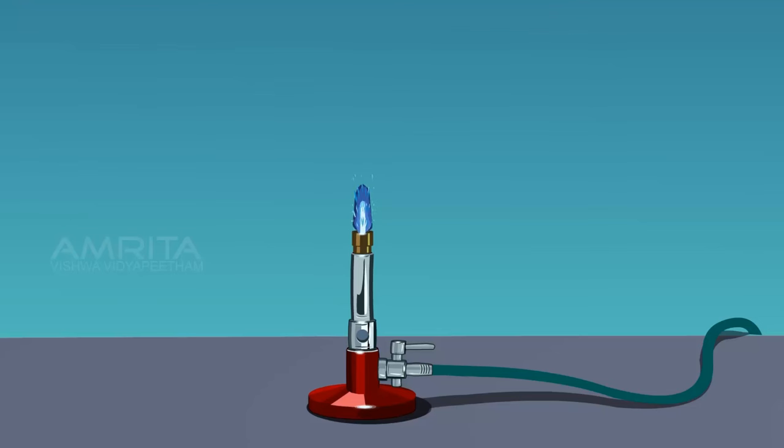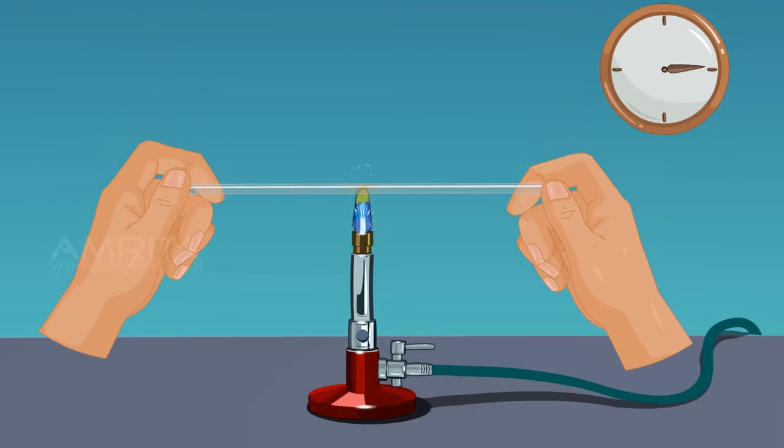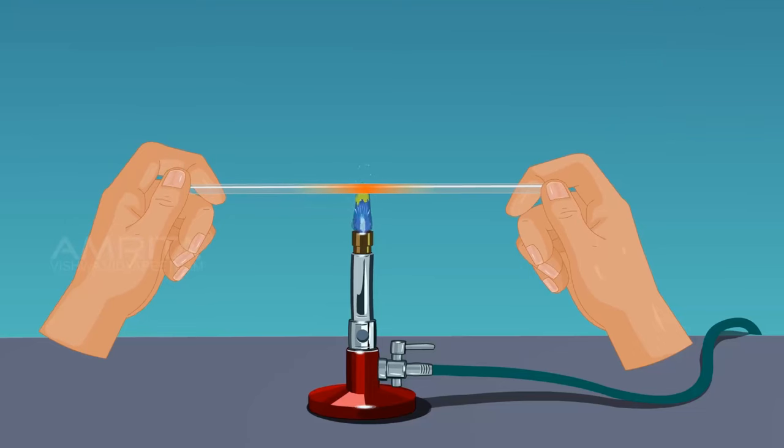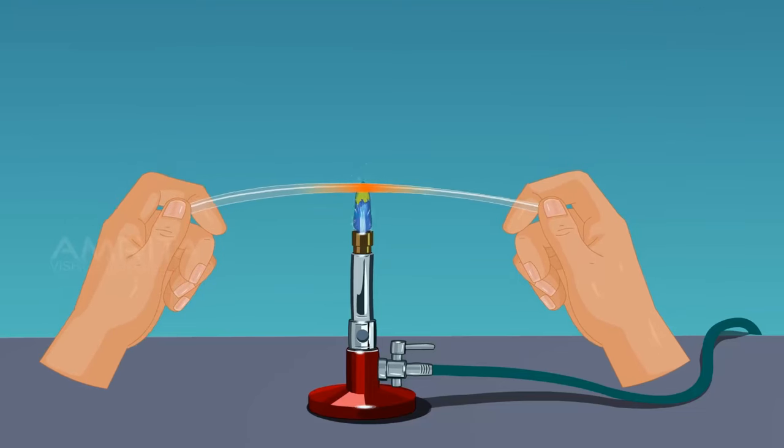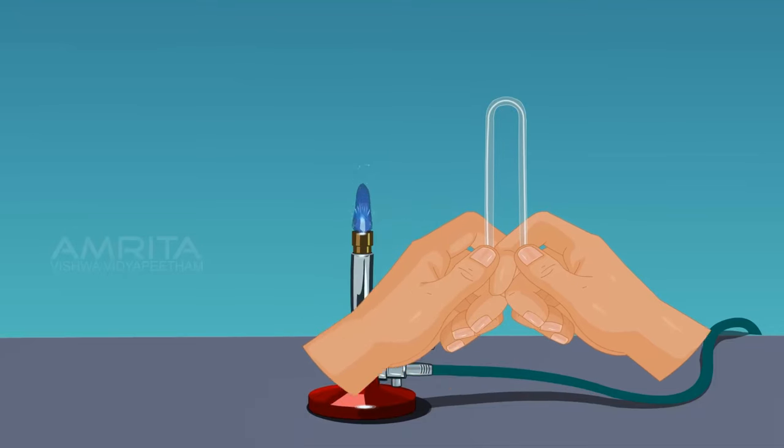Hold the glass tubing between the thumb and the fingers. Introduce it lengthwise into the non-luminous flame of the burner. Keep the tube rotating till it softens. Apply gentle pressure so that it bends by itself. Remove the tubing from the flame.